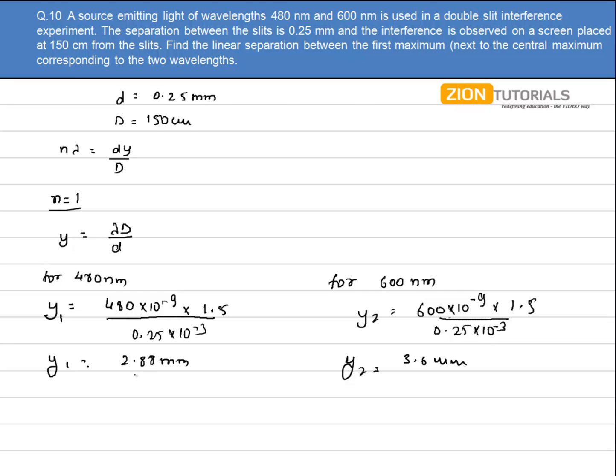Now I need to calculate the linear separation between the first maxima of both wavelengths. Δy = y₂ - y₁ = 3.6 - 2.88 = 0.72mm. That is the answer.